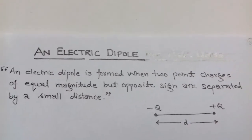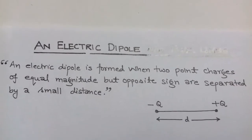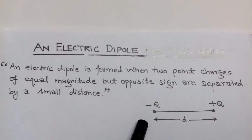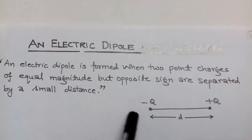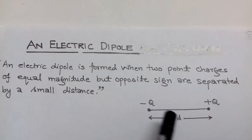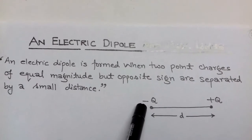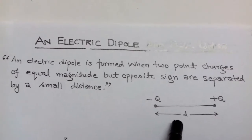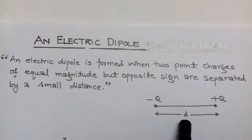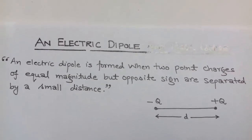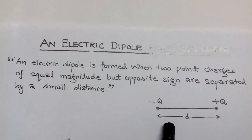The topic is an electric dipole. An electric dipole is formed when two point charges of equal magnitude but opposite sign are separated by a small distance. It has two poles — a positive pole and a negative pole — and together they form an electric dipole.